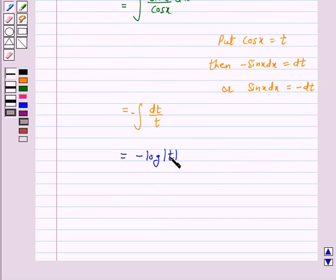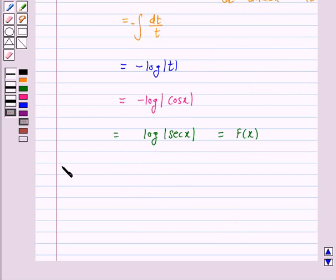Now, here we will resubstitute the value of t, that is, it is equal to minus log mod of cos x, and this is again equal to log of mod sec x, and this is equal to F(x) because it is the anti-derivative of tan x. Therefore,